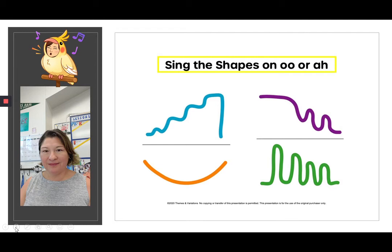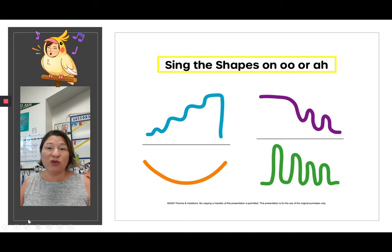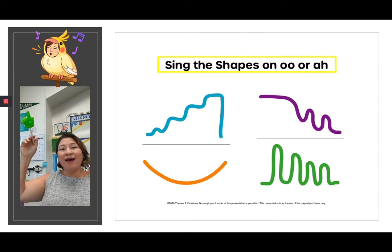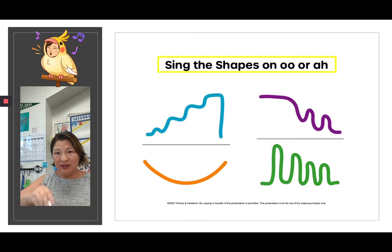In this next slide, we're going to sing the shapes on ooh or ah. The blue one goes up in intervals. The purple one goes down. The orange one is like a smiley face — it starts high, goes low, and goes high again. And the green one goes up and down and up and down. So just follow along as I sing the colored shapes. Hello boys and girls, we're going to sing the shapes on ooh or ah. Here's the first shape in blue. We went from the lowest and went up like in steps to the highest, and back down.